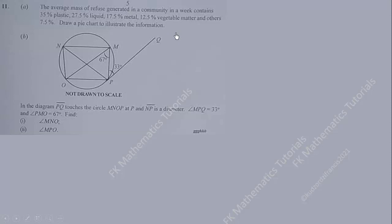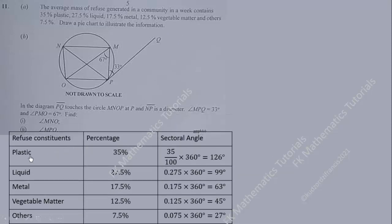The percentage for plastic is 35%. Since the sum of angles in all sectors is 360 degrees, we calculate the sector angle for plastic as 35% of 360 degrees. That gives us 126 degrees. You could also multiply 0.35 by 360 to get 126 degrees.